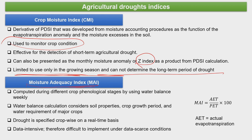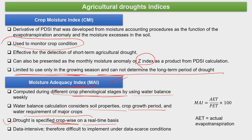The Moisture Adequacy Index (MAI) is calculated during different crop phenological stages using a weekly water balance. The water balance calculation considers soil properties, crop growth, and water requirements of various major crops. Drought is specified crop-wise on a real-time basis because different crops require different water intake — what is drought for rice may not be drought for wheat. MAI is data-intensive and therefore difficult to implement where primary or secondary data is limited.